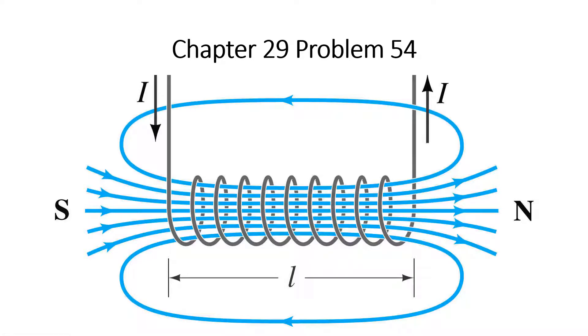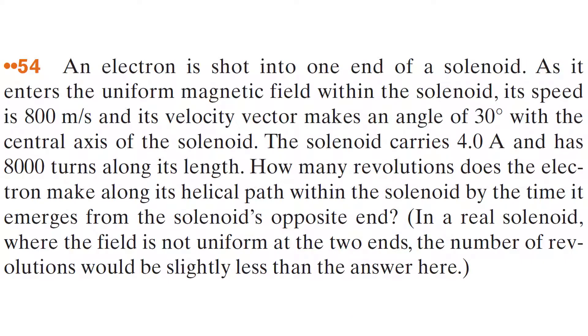Chapter 29, Problem 54. An electron is shot into a solenoid. It travels along a corkscrew path, and you need to figure out how many revolutions the electron goes through by the time it emerges from the other side.